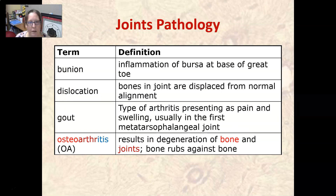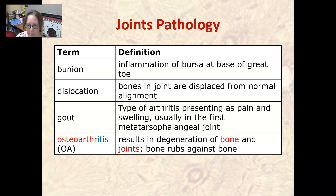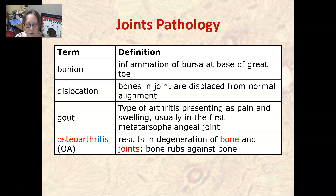Now we have joint pathology. A bunion is an inflammation of the bursa at the base of the great toe. A dislocation is where the bones in the joint are displaced from normal alignment. Gout is a type of arthritis presenting as pain and swelling, usually in the first metatarsophalangeal joint — a fancy medical way of saying the big toe. This is due to uric acid crystals that crystallize in the joint, and that's what causes pain.